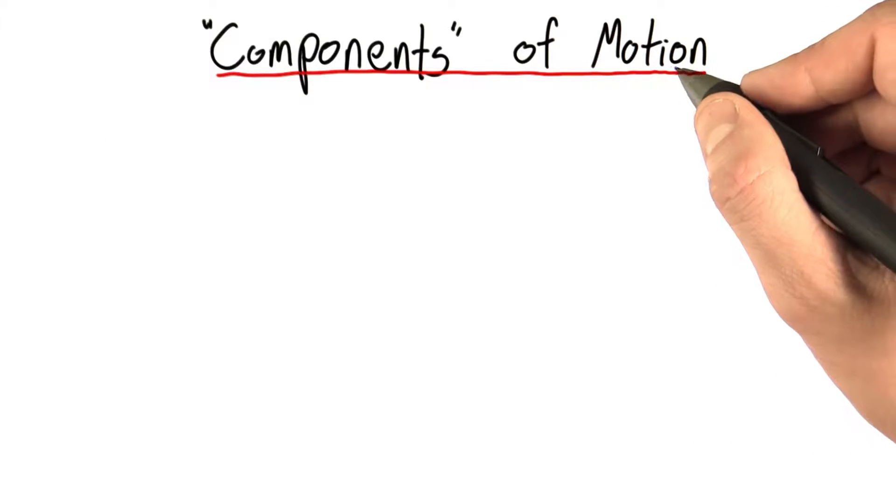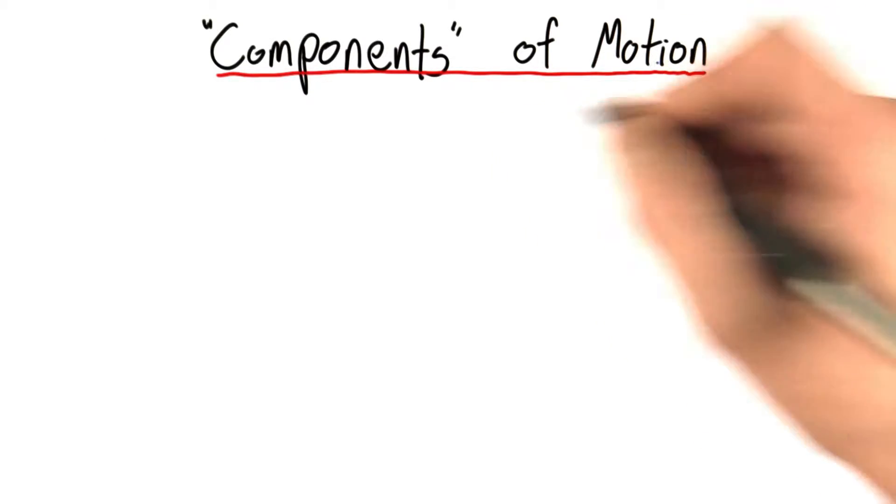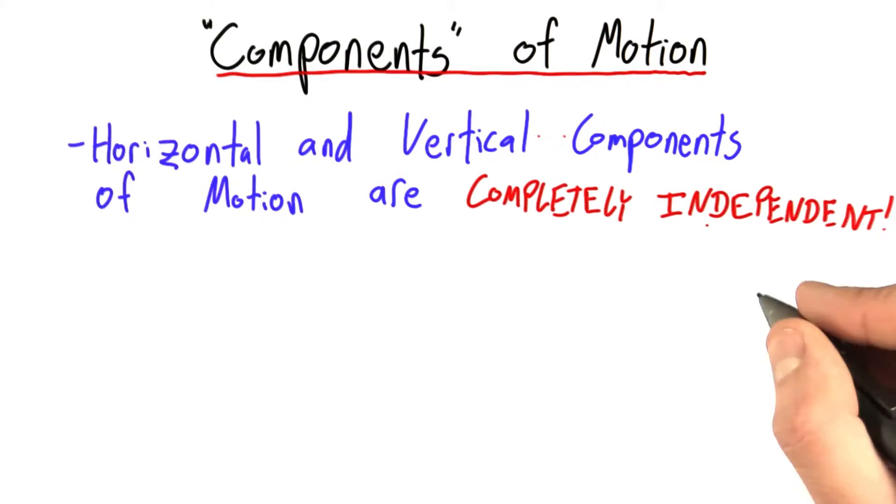Motion has two components: a horizontal and a vertical component, and these two components are completely independent.